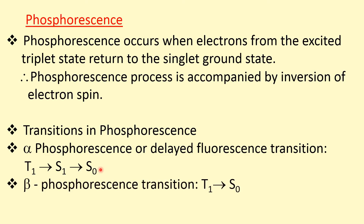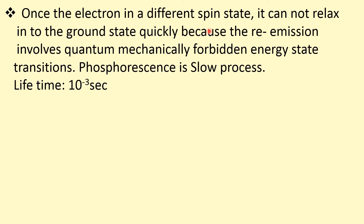For beta phosphorescence, the transition is directly from T1, the first triplet excited state, to the singlet ground state S0. Once the electron is in a different spin state, it cannot relax quickly into the ground state because the re-emission involves quantum mechanically forbidden energy state transitions. When the electron is in the triplet state, it cannot immediately return to the singlet ground state, as this transition is quantum mechanically forbidden. So phosphorescence is a slow process.